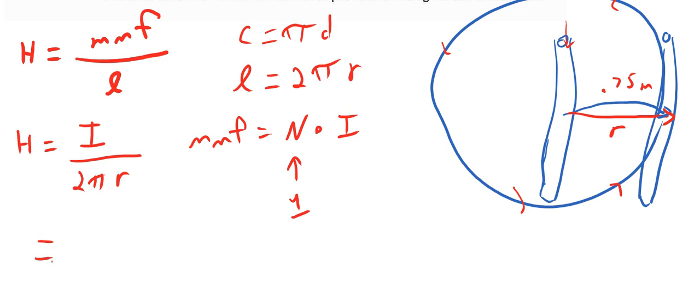Now here we have 1500 amps divided by 2 pi times 0.75 meters.